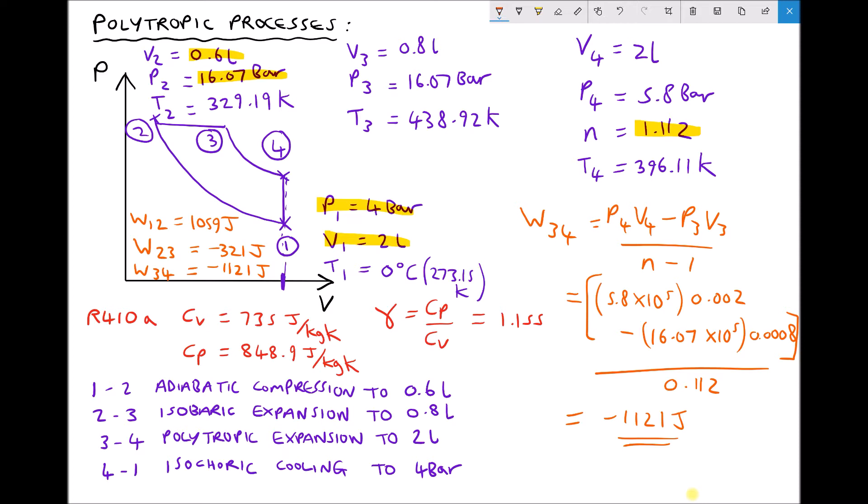Now position 4 to position 1 is isochoric cooling. So the important thing here is because the volume of the gas isn't changing, no work is being done either on the gas or by the gas. Therefore W4 to 1 is just going to be 0. We only have work done when the gas is either expanding or contracting. So W4 to 1 equals 0 joules.